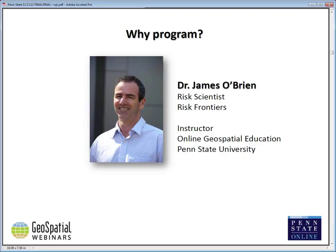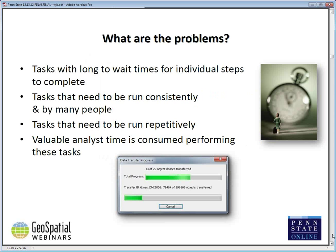I'm really pleased to welcome my colleague and friend from Down Under, Dr. James O'Brien. He's a risk scientist at Risk Frontiers and also an instructor in our online geospatial education program. Risk Frontiers is an Australian independent research center sponsored by the insurance industry to better aid understanding and pricing of natural hazard risks in the Asia-Pacific region. He has a BSc in Geographic Information Science from Curtin University and a PhD in geography from Penn State, where he worked on representing geographic semantics. James instructs specifically our Geog485 Python course at Penn State. James, welcome.